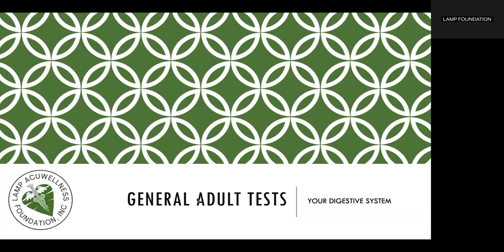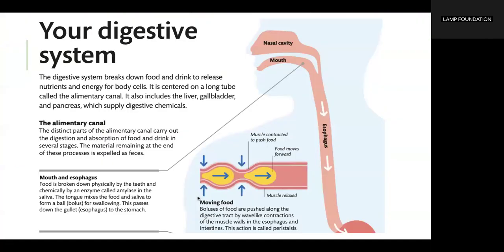The digestive system breaks down food and drink to release nutrients and energy for body cells. It is centered on the long tube called the alimentary canal, and also includes the liver, gallbladder, and pancreas, which supply digestive chemicals. The distinct parts of the alimentary canal carry out digestion and absorption of food and drink in several stages. The material remaining at the end of these processes is expelled as feces.